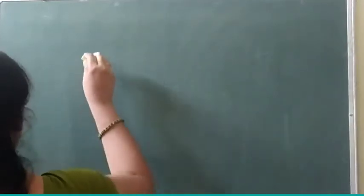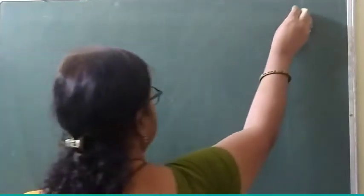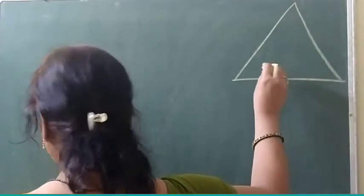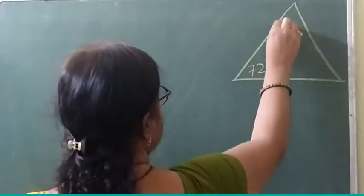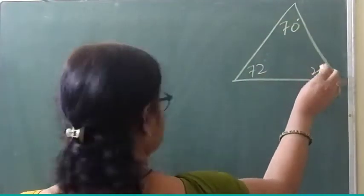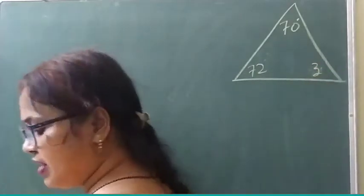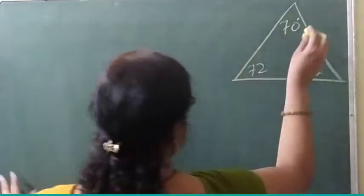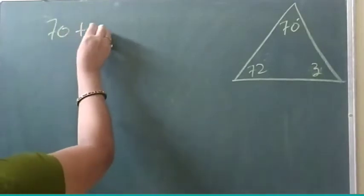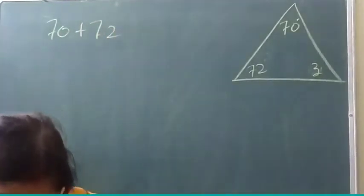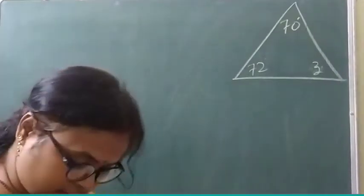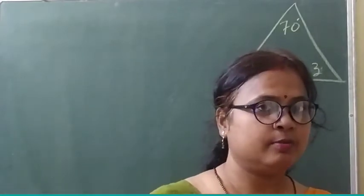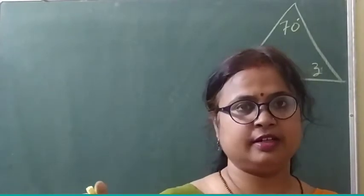Question number 1. In this figure, one angle is 72 degrees, another is 70 degrees, and this one is Z. You have to find out the value of Z. We will write here 70 plus 72. First you will write the reason — I discussed reason 1 and reason 2 in my previous video, but you will write it in detail.